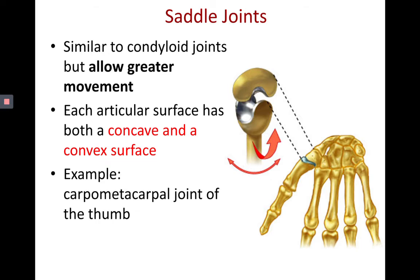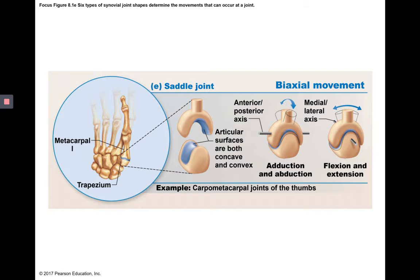Saddle joints are similar to condyloid joints but have a more extended convex surface that looks like a saddle, with one part sitting on a concave saddle structure. They allow slightly greater movement than condyloid joints and are found at the base of the thumb — the carpometacarpal joint between the carpals and the thumb's metacarpal. Like condyloid joints, saddle joints are biaxial, allowing adduction, abduction, flexion, and extension.